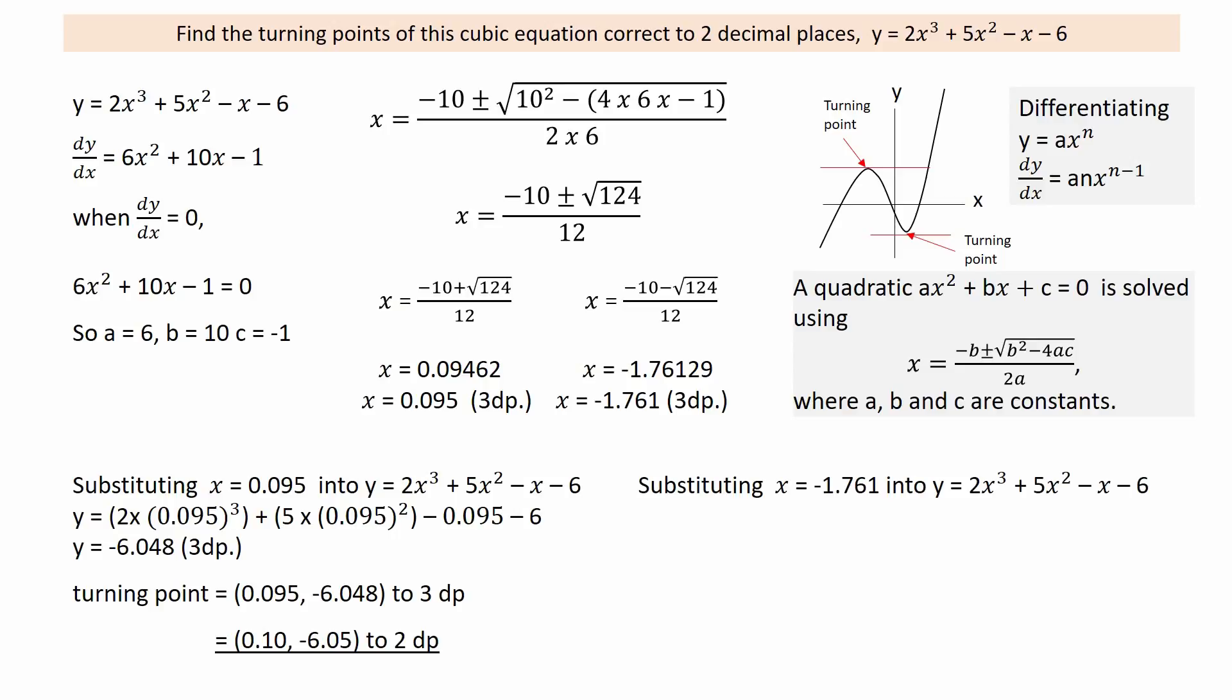Substituting the second value of x into the cubic equation, and again nesting the brackets, to obtain y equal to 0.344 to three decimal places. And the turning point to three decimal places. Finally, the two turning points are given to two decimal places as required.